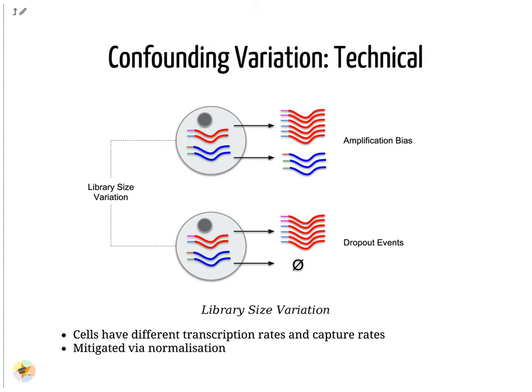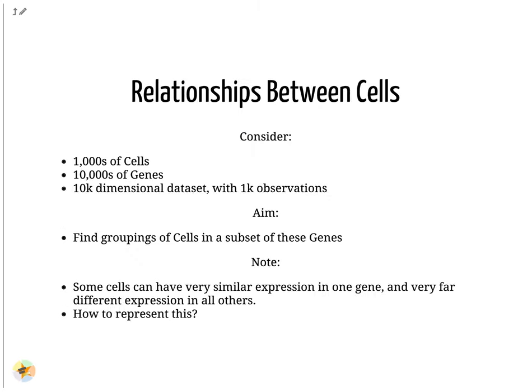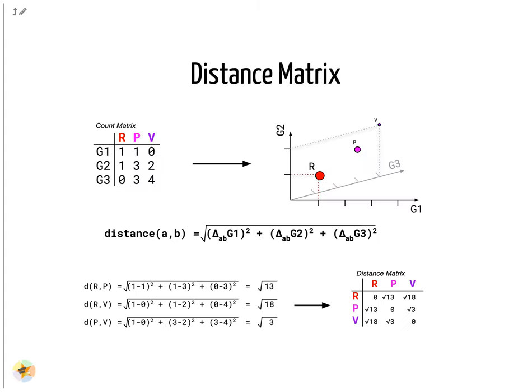Once we have removed unwanted confounders from the analysis, we have the issue of quantifying the relationships between cells. From a data analysis standpoint, we treat each cell as an observation and each gene as a variable. For large genomes this means extremely high-dimensional datasets. Cells exist as points in this extremely sparsely populated high-dimensional space, making it difficult to see the natural groupings. The high-dimensional space can be reduced a lot by simply filtering out genes that do not appear to be differentially expressed across all cells. To find the relationships between these cells, we need to define the distances between cells, which a distance matrix does by defining the distance between any two cells by a single score.